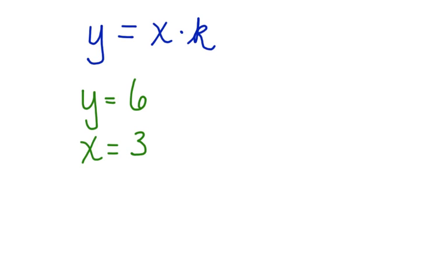y is equal to 6, x is equal to 3. If y varies directly as x, what is the constant? Using these given values, we can substitute them back into this equation and solve for k, the constant.